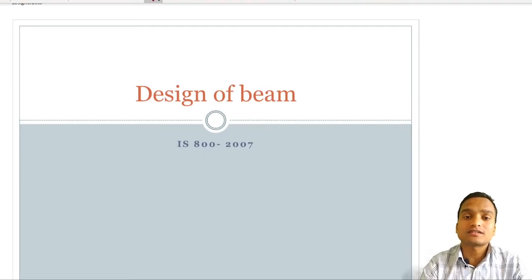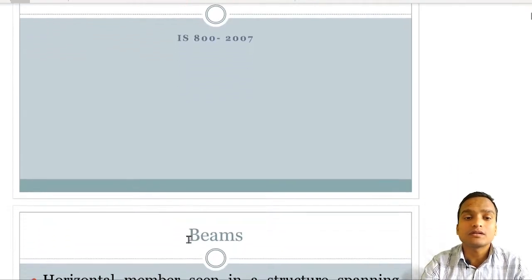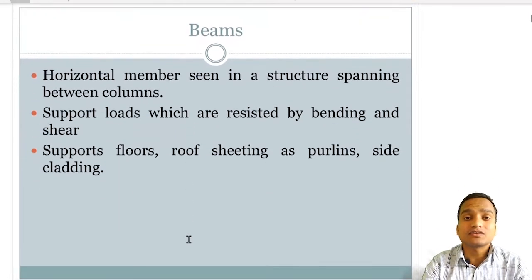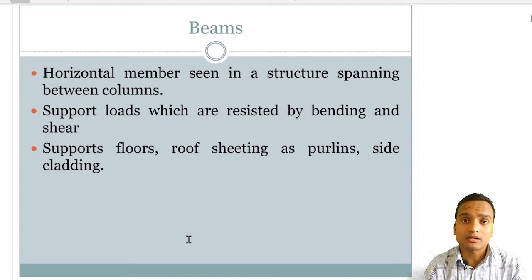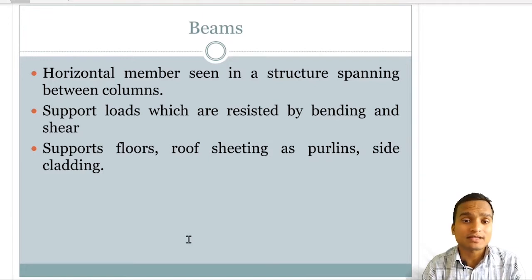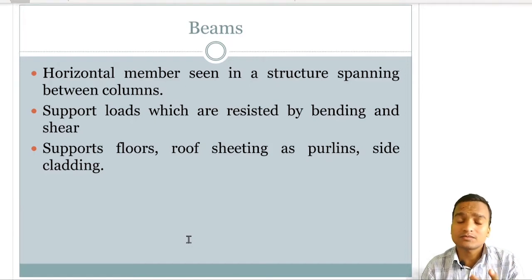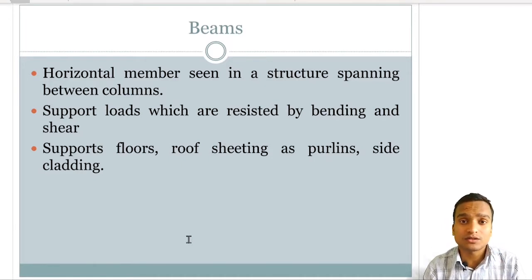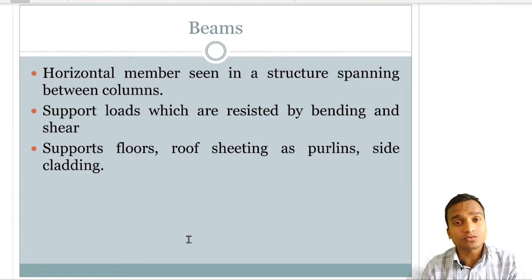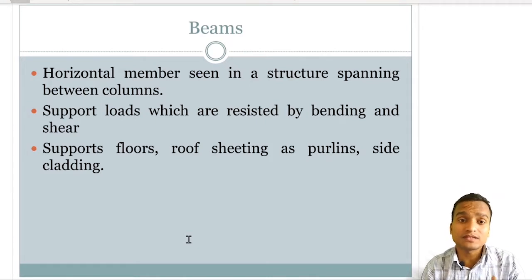As far as introduction is concerned, a beam is a horizontal member commonly seen in structures spanning between columns. They support the loads coming on the structure by two actions: bending and shear. That's why in RCC beams we provide two kinds of reinforcement — longitudinal reinforcement resists bending action and transverse reinforcement resists shear action.